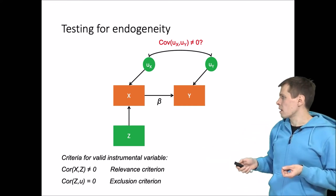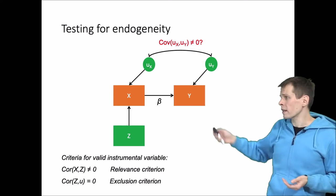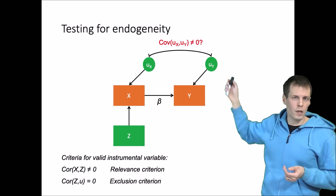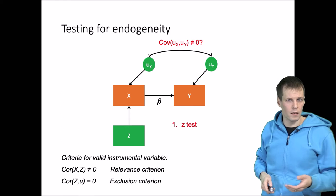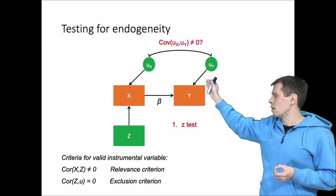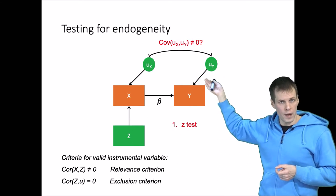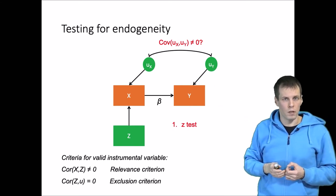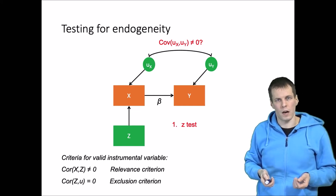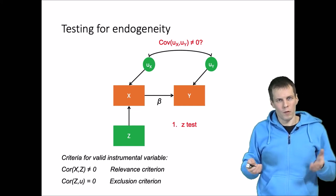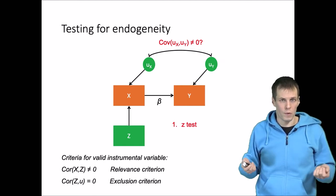So how do we go about testing that assumption? The simplest thing is if you use SEM you'll get an estimate for this correlation after you free it, and you just take a look at the Z test for that correlation. If that is significant then you conclude that there is evidence of an endogeneity problem in the data and using instrumental variables is warranted. If it's non-significant then we conclude that endogeneity is probably not a problem for our data and we can probably forego the instrumental variables.